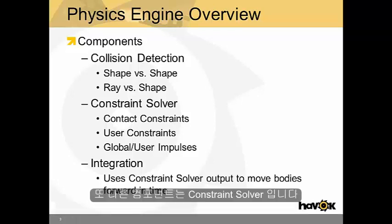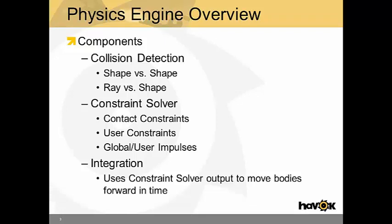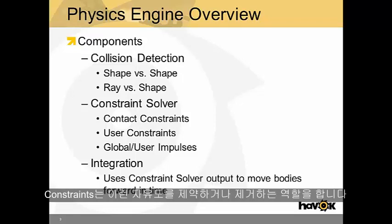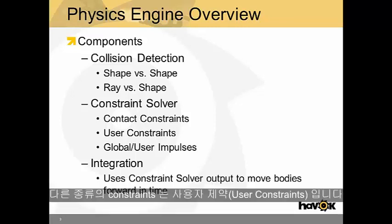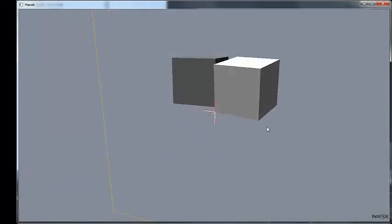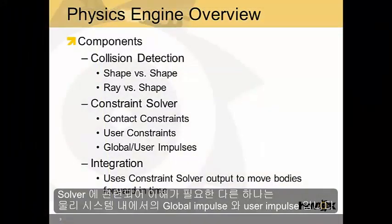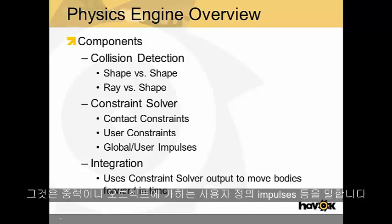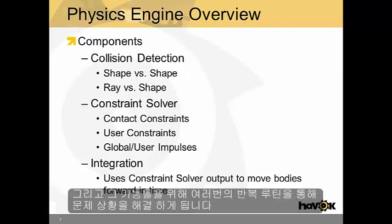Another component is the constraint solver. In a 3D world, there are typically six degrees of freedom: three linear degrees of freedom in the x, y, and z axes, and three angular degrees of freedom in the x, y, and z axes. Constraints simply limit or remove degrees of freedom. An example is a contact constraint — when two bodies come in contact, they can no longer move in the direction of each other. Other types of constraints are user constraints, such as hinges or ball-and-socket joints. The constraint solver also needs to understand global and user impulses in the system, like gravity or user-defined impulses on objects. It iterates over all of these impulses and constraints and tries to resolve them.